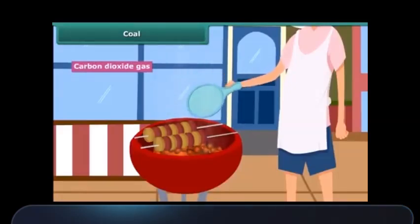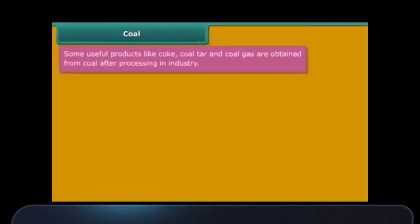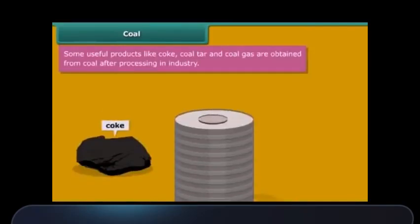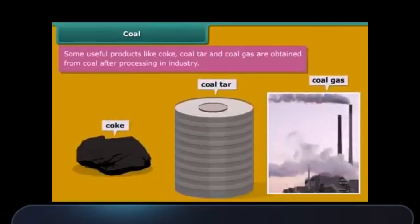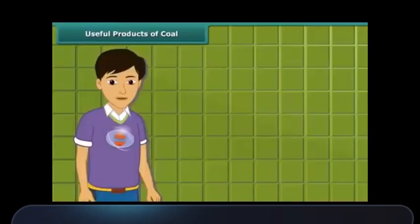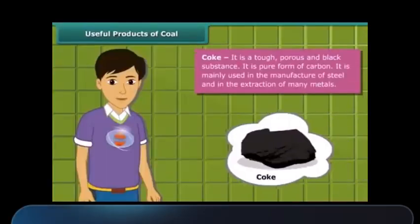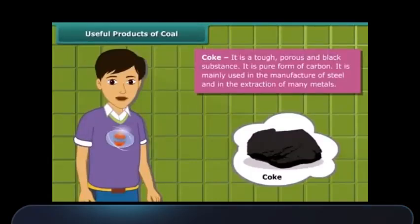You will be surprised to know that some useful byproducts of coal — like coke, coal tar, and coal gas — are obtained directly from coal. Coke is a tough, porous, and black-colored substance. It is mainly used in the manufacturing of steel and the extraction of many metals.